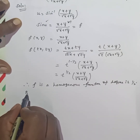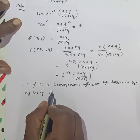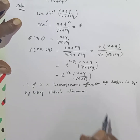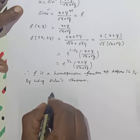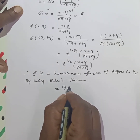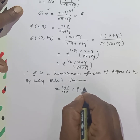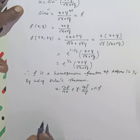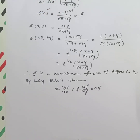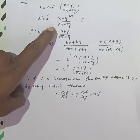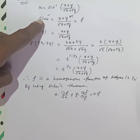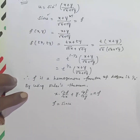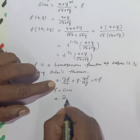Since f is a homogeneous function, we apply Euler's theorem. The formula for Euler's theorem is: x times ∂f/∂x plus y times ∂f/∂y equals n times f, where n is the degree. This formula is very important.